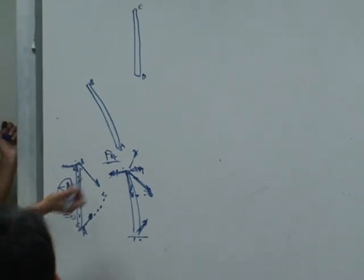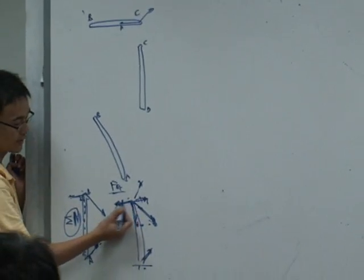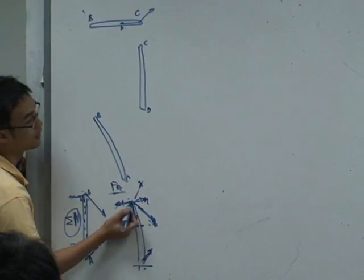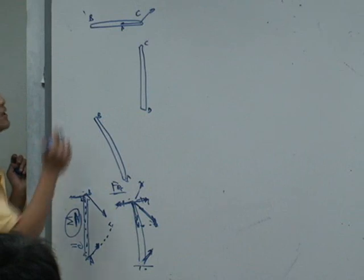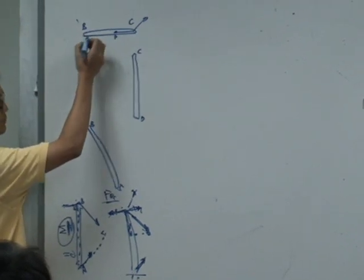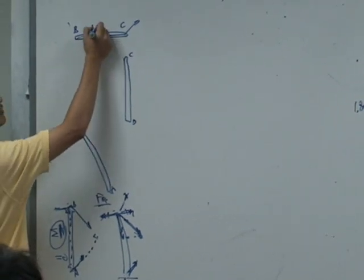Then in another round, we can find out the reaction which is the member FBA gives a reaction to the member BC, which should be in this direction.